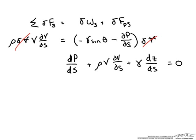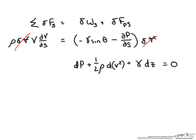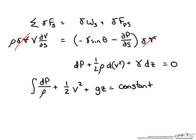Lastly, our velocity term can be rewritten so that we have an ordinary differential equation. Taking that term on the right side and plugging it back into the middle part of our equation, the equation simplifies further and we can integrate it. At this point we have a pretty simplified equation that equals some constant.